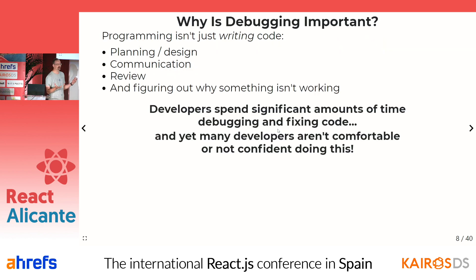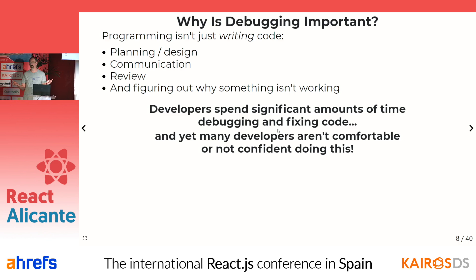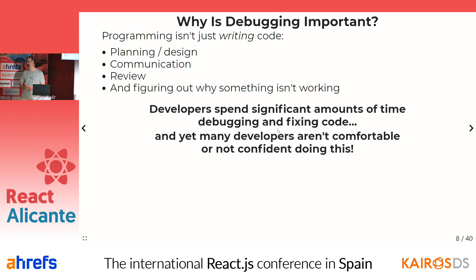When we think about programmers, the usual stereotype is that it's late at night, you're hunched over your keyboard, drinking some caffeine, deep in the code, furiously typing. But we all know that in reality programming is a lot more than that. We spend a lot of time planning, communicating with teammates, reviewing code, putting up PRs, discussing comments. And we spend a lot of time trying to figure out why things aren't working. The reality is that developers spend a very significant amount of time debugging and fixing code.